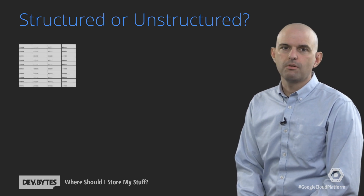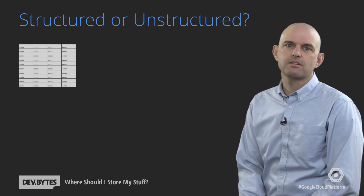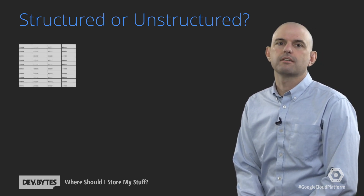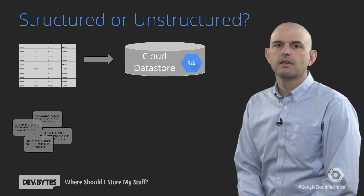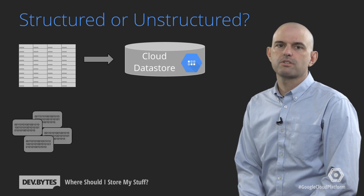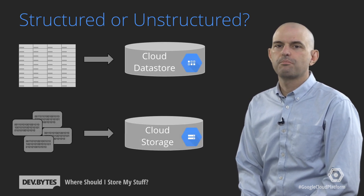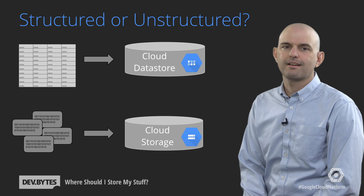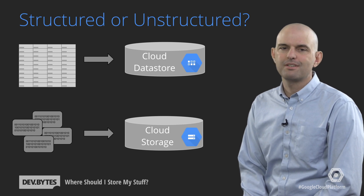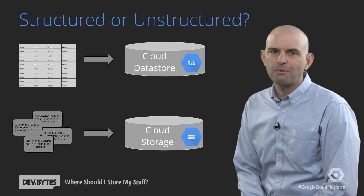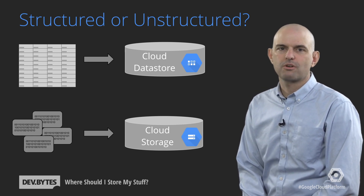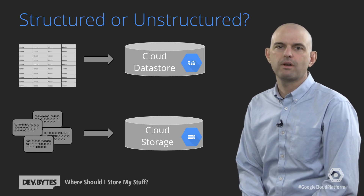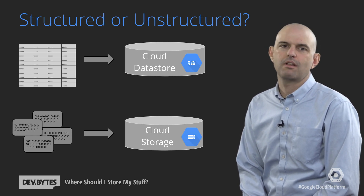If it kind of looks like a table, then Cloud Datastore is the right fit. If it looks more like unstructured bags of bytes, then Cloud Storage is where it should go. Most apps have both types of data and will use both of these storage systems. Both give you massive scalability and zero administration, and both can be used by code running on App Engine, Compute Engine, or on your clients.